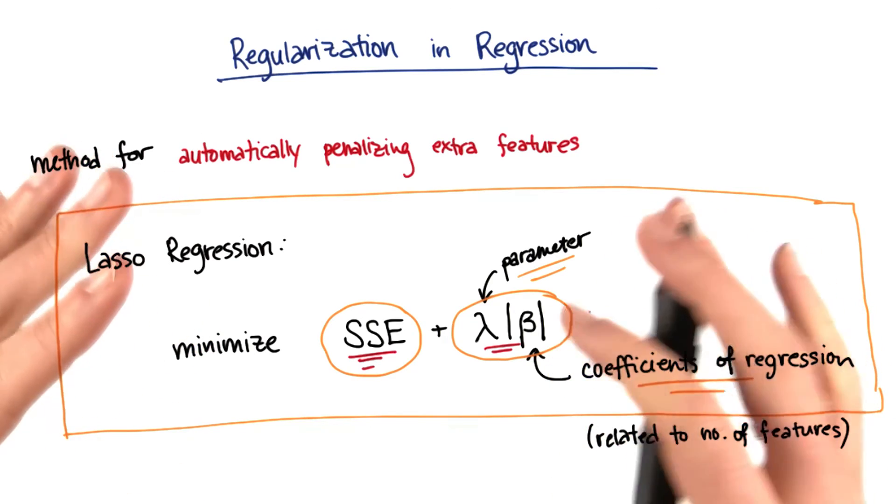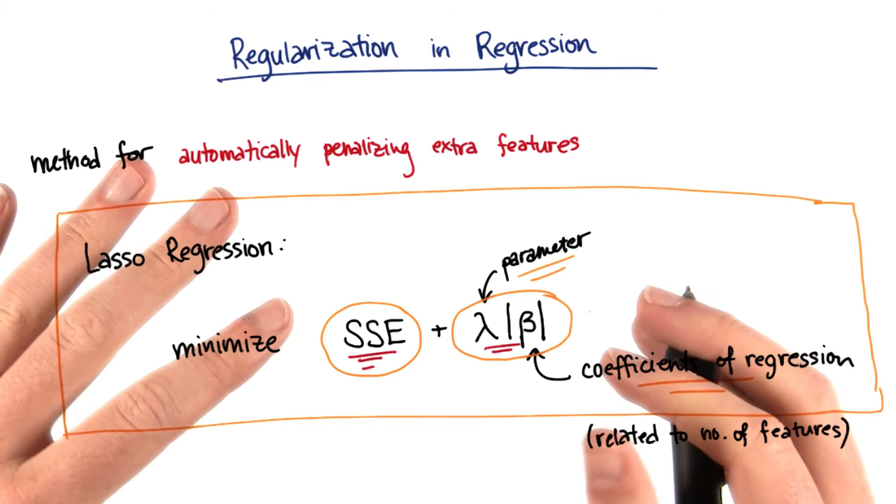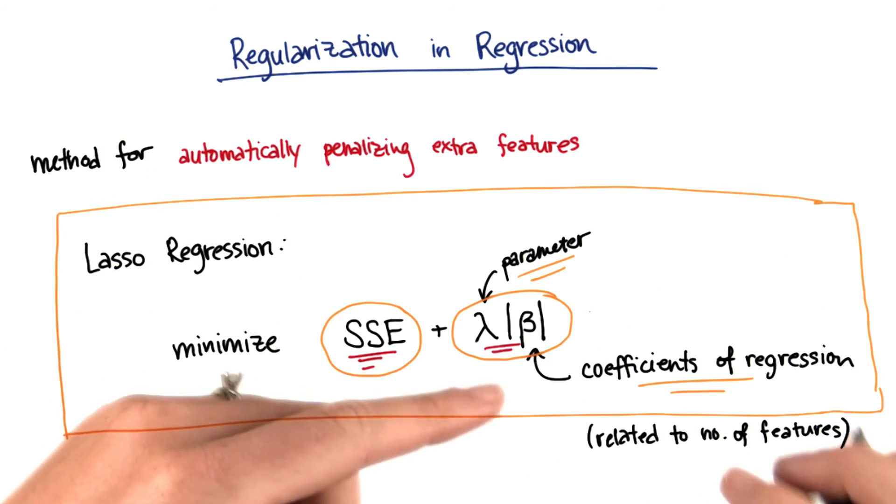This precisely formulates, in a mathematical way, the tradeoff between having small errors and having a simpler fit that's using fewer features.